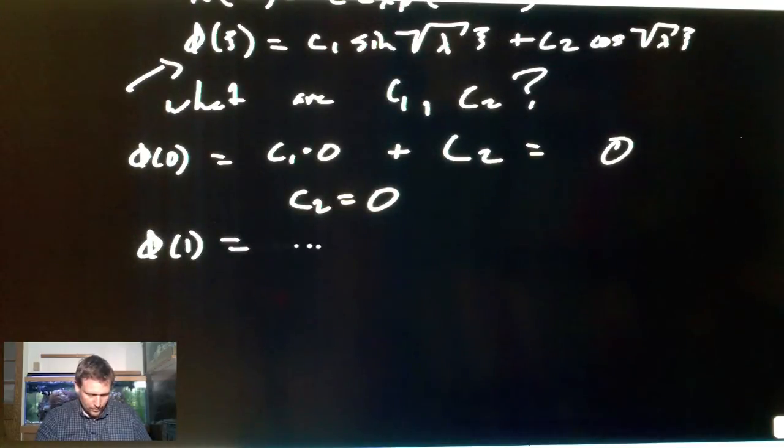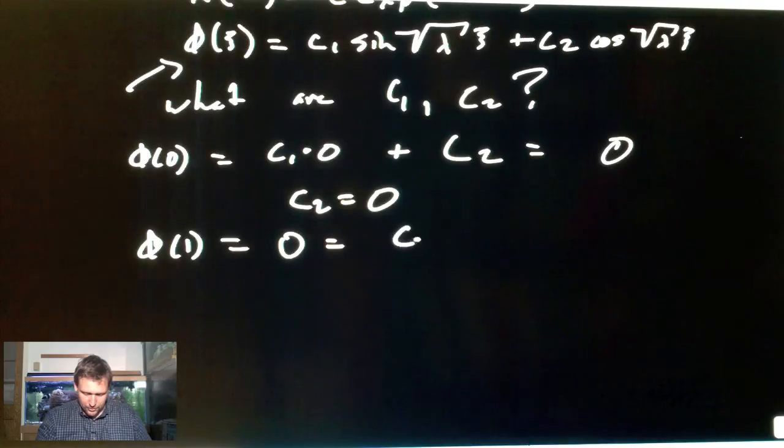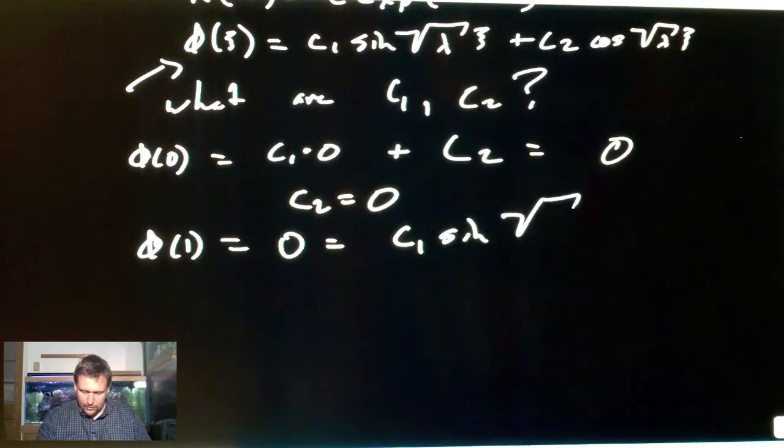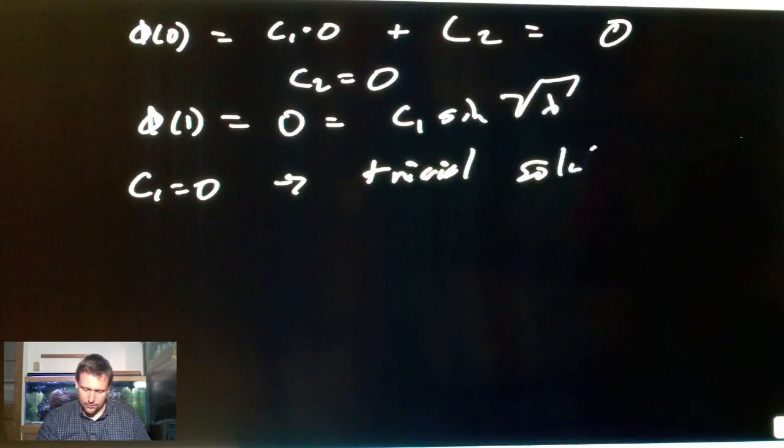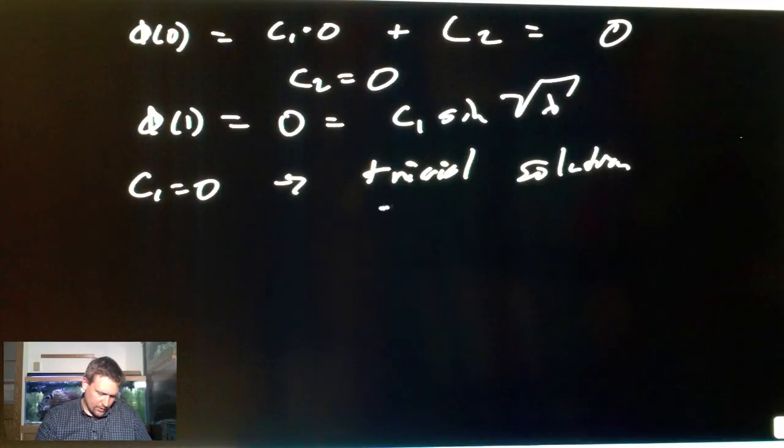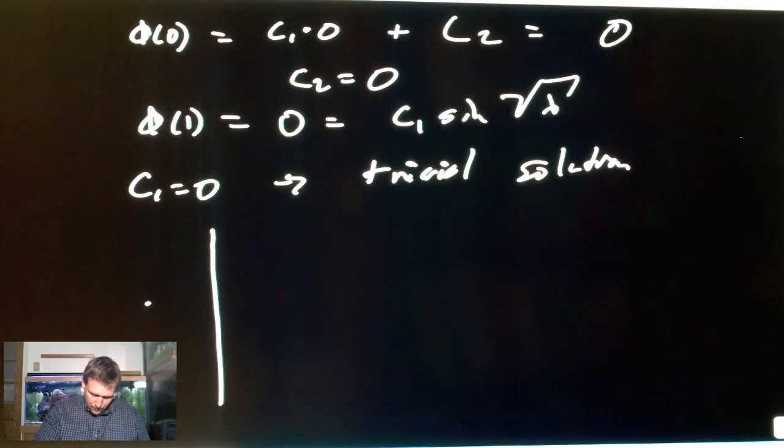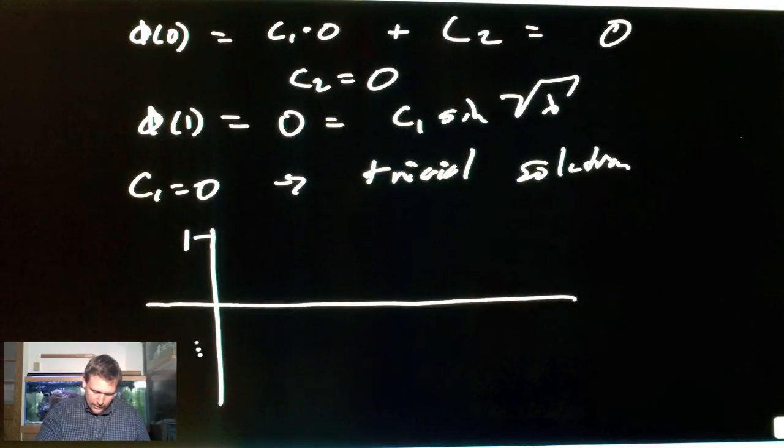So phi at 0 equals C2 equals 0. Then we have phi at 1 equals 0, which equals C1 sine square root lambda. So then this suggests maybe C1 equals 0. That is a trivial solution. And it doesn't really help us get a nice solution to the problem that's actually useful. So C1 equals 0. Trivial solution. Don't care.